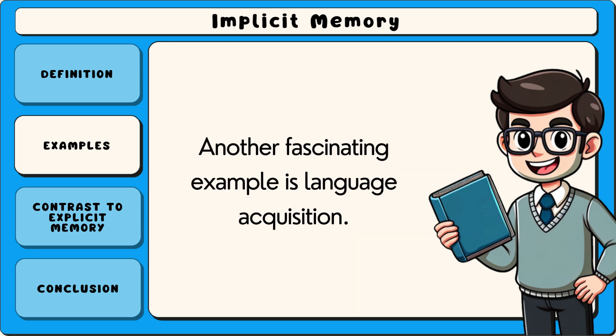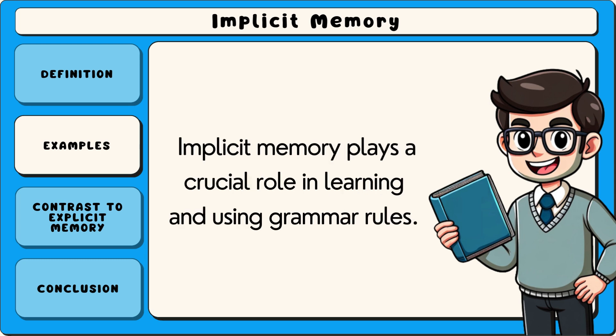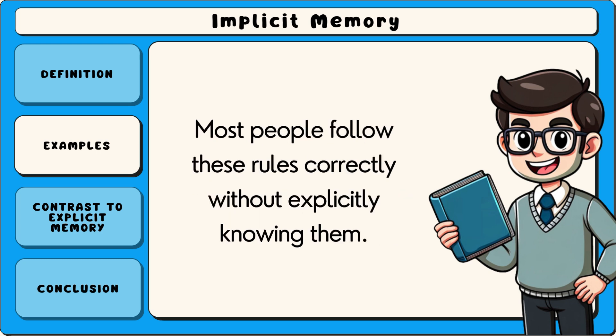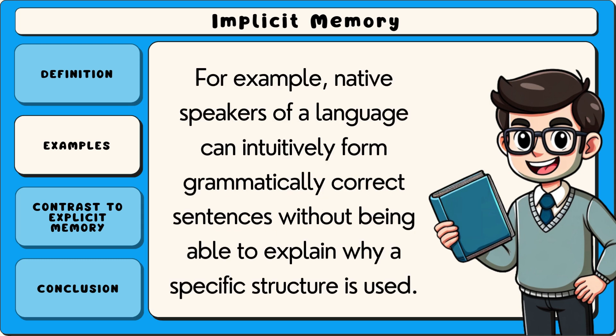Another fascinating example is language acquisition. Implicit memory plays a crucial role in learning and using grammar rules. Most people follow these rules correctly without explicitly knowing them. For example, native speakers of a language can intuitively form grammatically correct sentences without being able to explain why a specific structure is used.